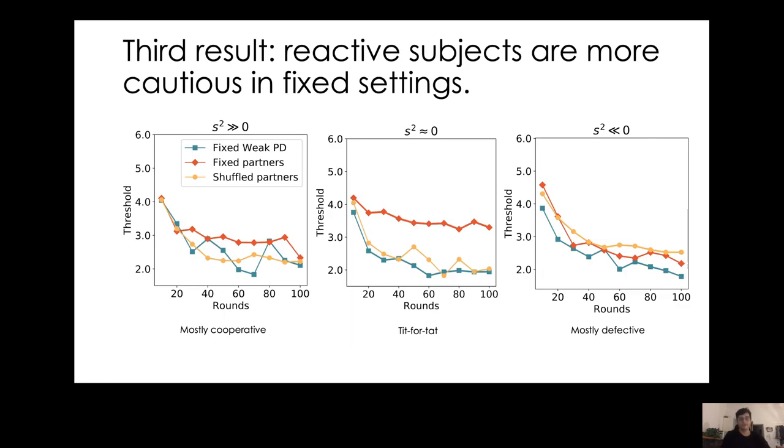For the third result, we divided subjects into three groups: those who mostly cooperated, those who mostly defected, and those who reacted to their opponents' actions, tit-for-tat. The red line is very different in the tit-for-tat group, meaning the mostly cooperative and mostly defective subjects didn't see a change in their cautiousness.